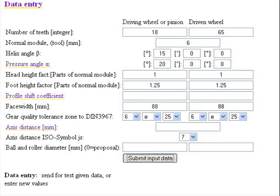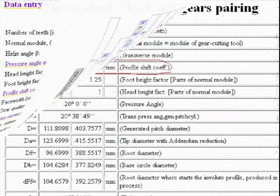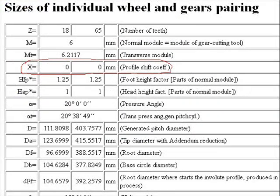Submit the input data and examine the result. The result list for so-called zero wheels with zero distance shows sizes of individual wheels and gear pairing.